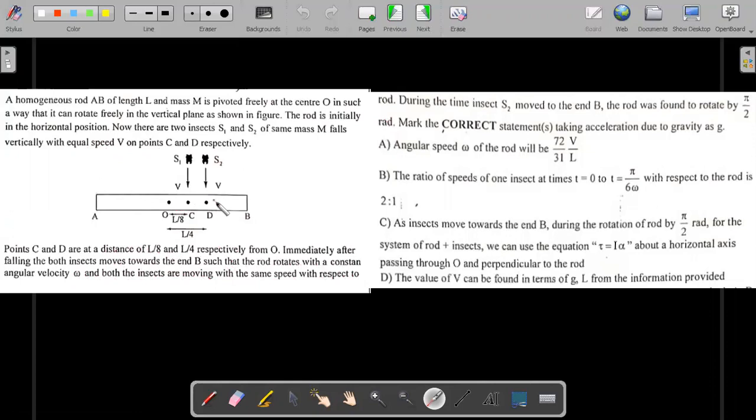The rod rotates with a constant angular velocity Omega and both insects are moving with the same speed with respect to the rod. They walk with respect to the rod with the same speed throughout, making sure that the rod starts rotating in the clockwise sense with constant angular velocity. During the time insect S2 moves to the end B, the rod was found to rotate by pi by two.